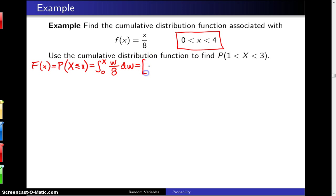That turns out to be w squared over 16 evaluated from 0 to x. When you plug in x you get x squared over 16, and when you plug in 0 you get 0. Again, that is defined on the interesting part of the distribution, which is the support which runs from 0 to 4.